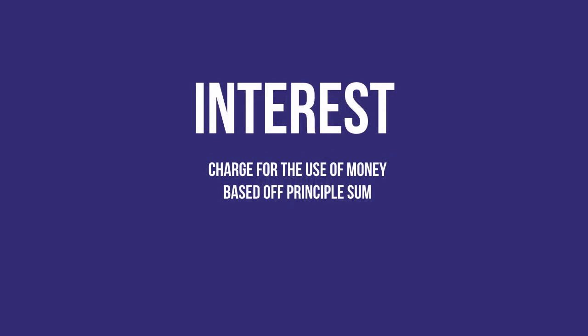Interest is defined as a sum paid or charged for the use of money or for borrowing money. So how is this interest calculated? Interest is applied periodically, usually annually. When the amount of money borrowed is the principal sum, interest usually exists as a certain percentage of this sum. There are two ways of calculating interest depending on the criteria of the loan.